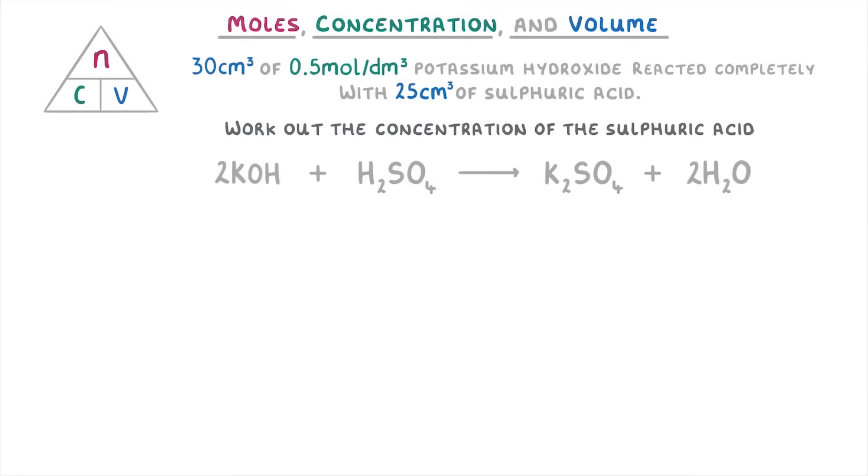Before we do anything else, though, it's worth writing out clearly what we already know from the question. For the potassium hydroxide, its volume is 30 centimetres cubed and its concentration is 0.5 moles per decimetre cubed. And for the sulfuric acid, we know its volume is 25 centimetres cubed.